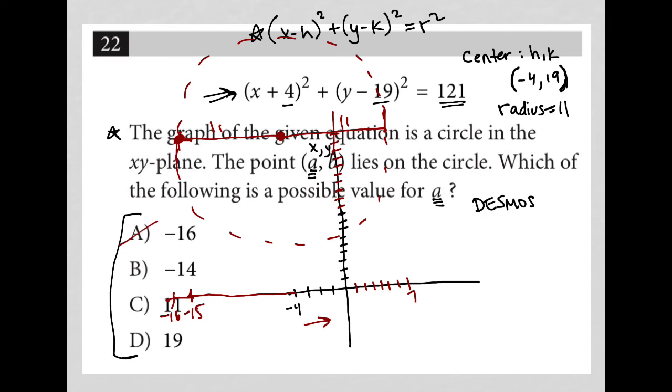So negative 16, there isn't a value that goes to negative 16. Negative 14 is negative 14. Yeah, right? Like there's definitely going to be two places where the graph touches negative 14. So I like that.